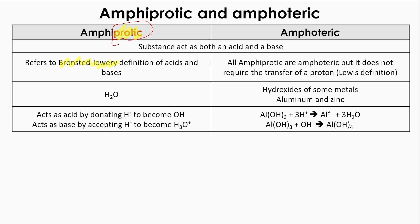But both of them, you have to know that both of them, they can react with acids as base or they can react with base as an acid. For that reason, they are amphiprotic or amphoteric. It could be a substance that acts as both acid and base. Of course, amphoteric is more general term for this kind of substances.